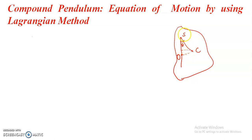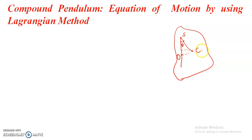So, S is the point of suspension, C is the center of mass, theta is the instantaneous angle, and SO is the vertical axis. Now, the kinetic energy of the oscillating system.